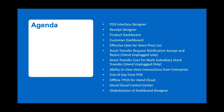The effective date for store price list is also a statutory requirement in the UK and Europe, where the price shown on shelves must match what is resolved at the point of sale. Other enhancements include stock transfer request notification for exception and rejection — available only in unplugged mode — and in a multi-subsidiary environment, a stock transfer cost can also be specified when receiving goods via stock transfers.